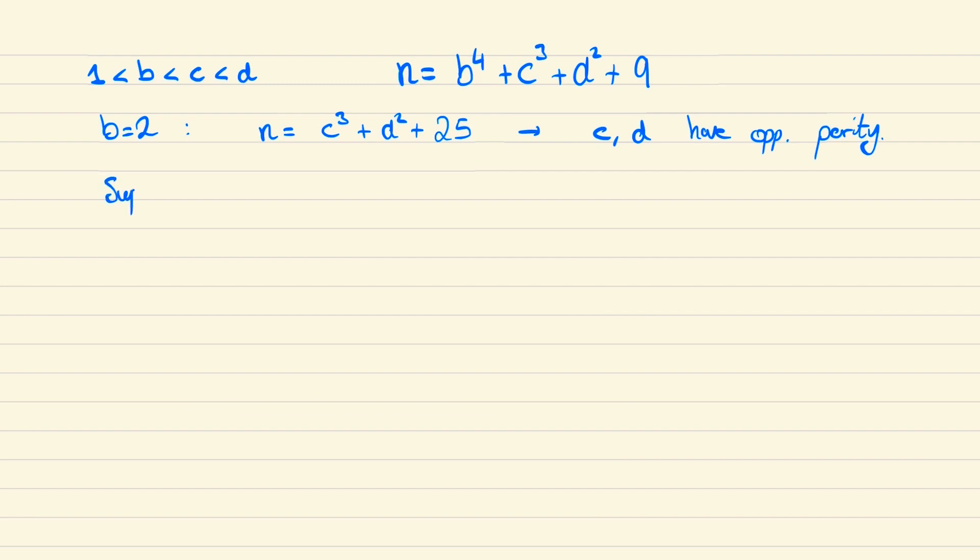Now suppose that we said c were equal to some power of 2, so we could write this as 2 to the power of k for k being greater than or equal to 2. Then we are supposing that c is at least a multiple of 4, and the same will be true for n. But if we look at the equation mod 4, then we have n which would be 0 is congruent to c cubed which would also be 0, d squared would either be 0 or 1, and 25 would be 1 mod 4. And so this says that 0 is congruent to either 1 or 2 mod 4, which of course is nonsense.